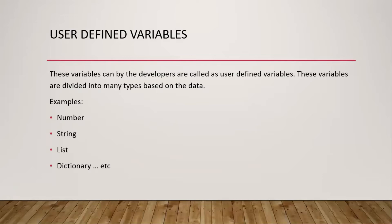Examples include number type, string type, list type, dictionary type, record type user-defined variables, etc. Let's take a real-time example.